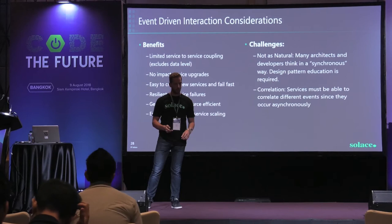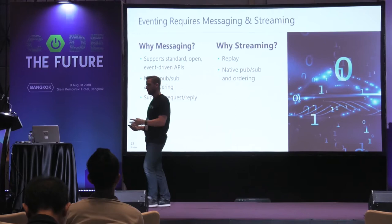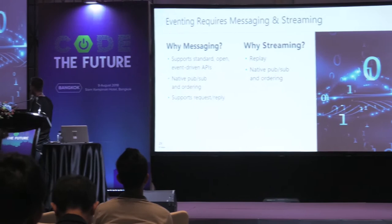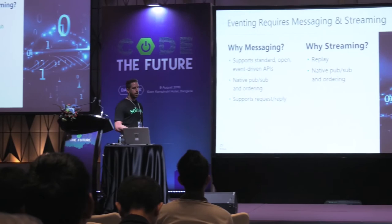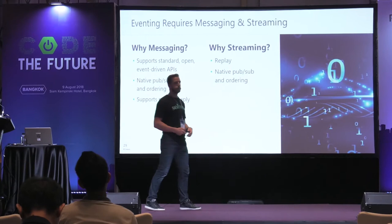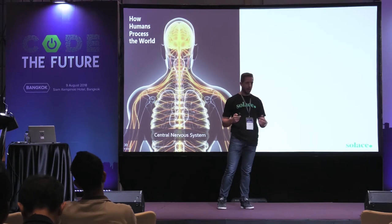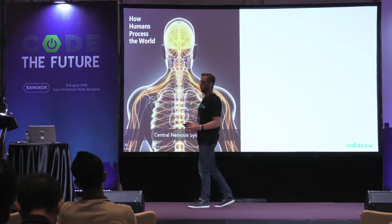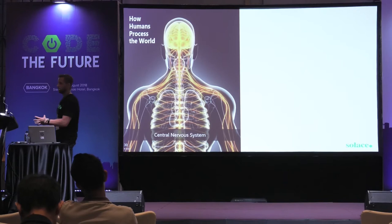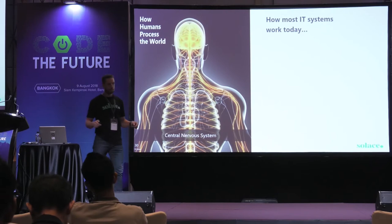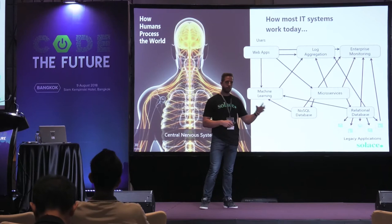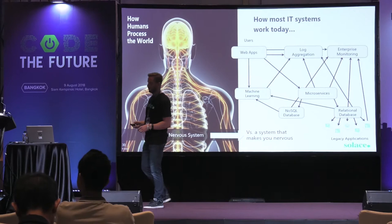Messaging systems typically use open standards and open APIs supporting pub/sub, queuing, ordering, and request-reply. Streaming platforms like Kafka handle replay capabilities very well. As an analogy: the human nervous system has a central processor taking all input through nerves — but many IT systems that have grown and been cobbled together end up with point-to-point connections everywhere, which can look quite messy.